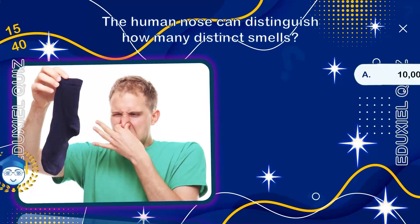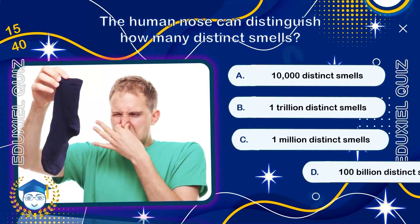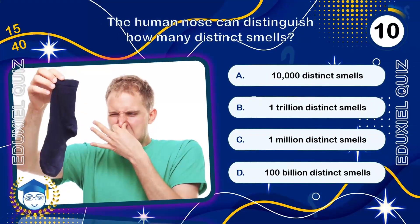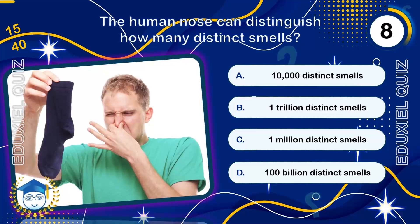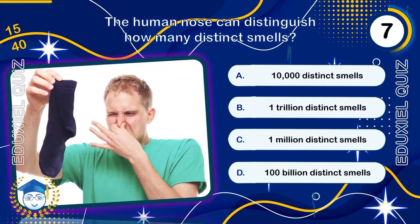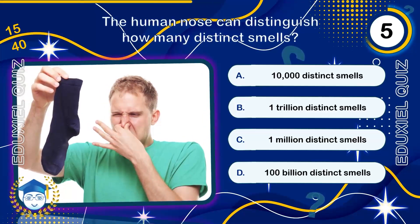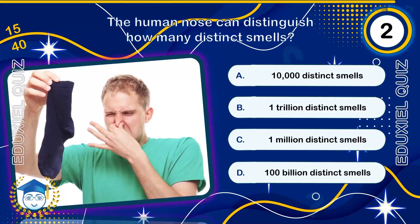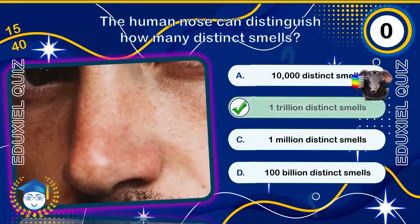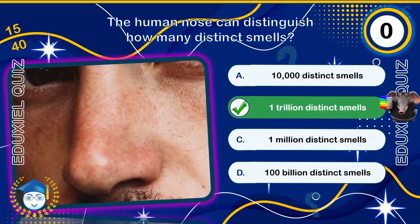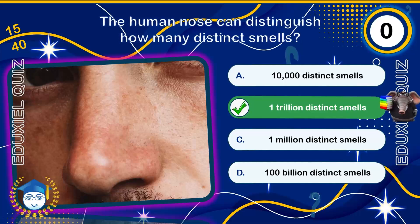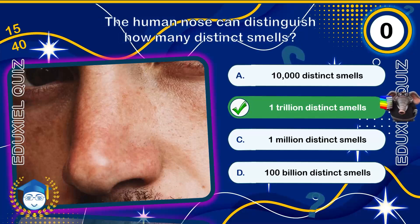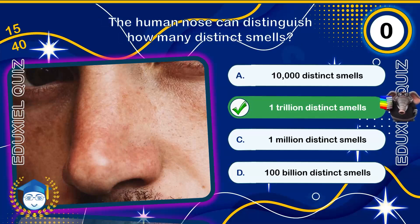The human nose can distinguish how many distinct smells? One trillion distinct smells. A 2014 study revised the estimate upwards significantly, suggesting the human nose can distinguish far more distinct scents than previously believed.